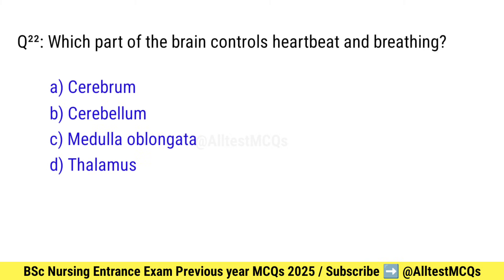Question number 22. Which part of the brain controls heartbeat and breathing? Correct option is C: Medulla oblongata.